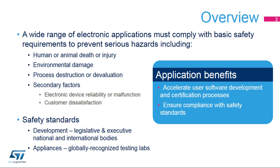The process for developing harmonized standards at both national and international levels is rather complex, sometimes involving completely opposite efforts, such as local market protection versus its globalization. The main influencing factors come from field experience, market requirements, insurance issues, and the globalization of trade and business. The standards are produced by specific legislative and executive bodies, while specific worldwide recognized testing houses inspect and verify all required appliances to ensure their compliance.